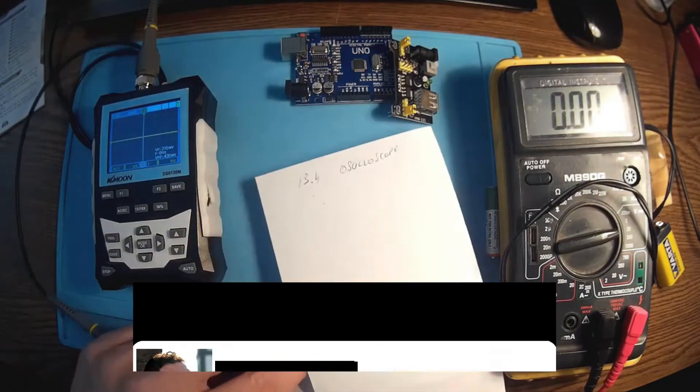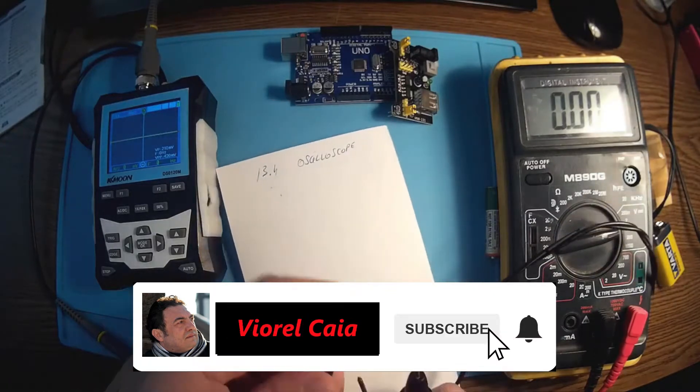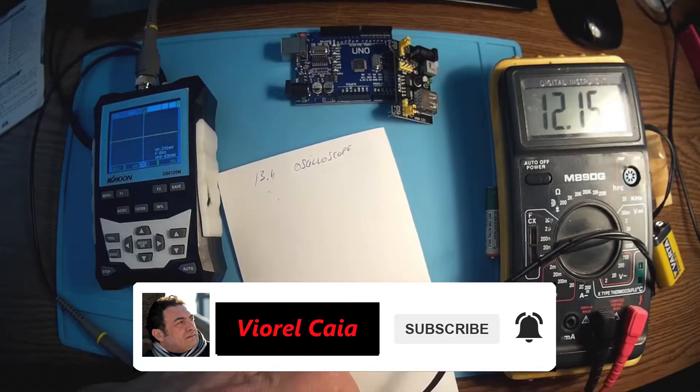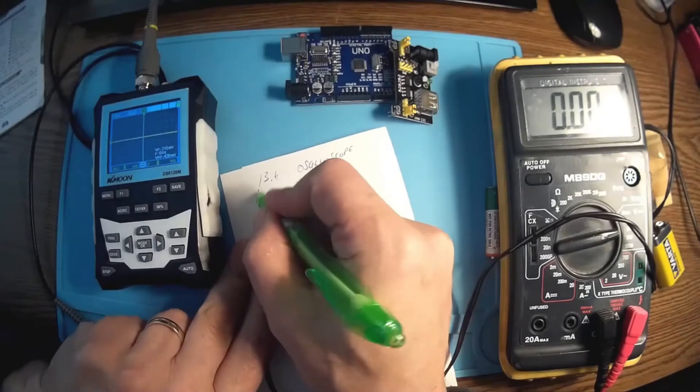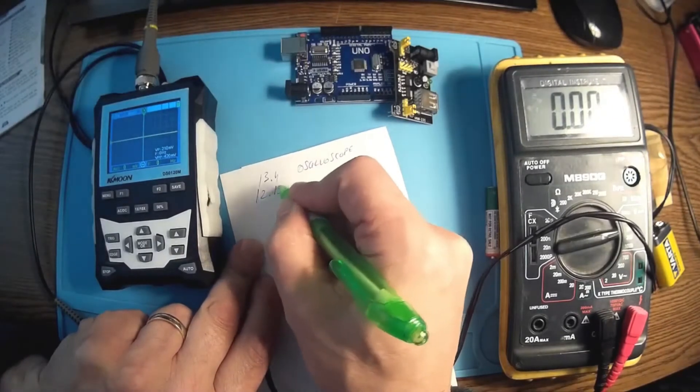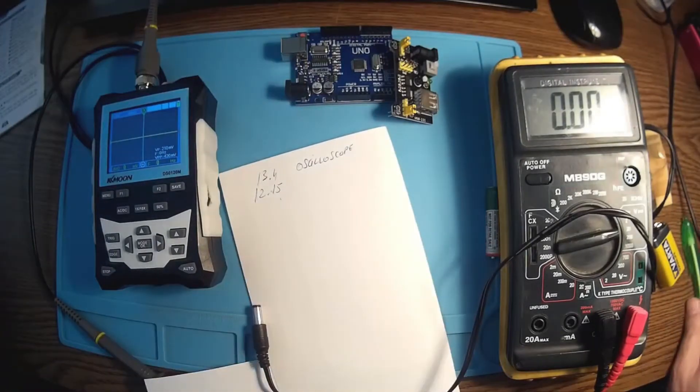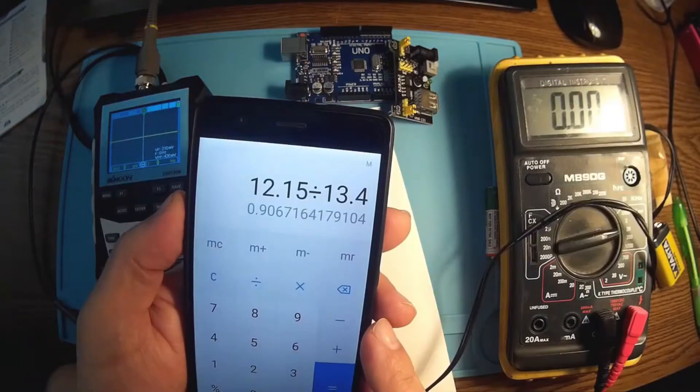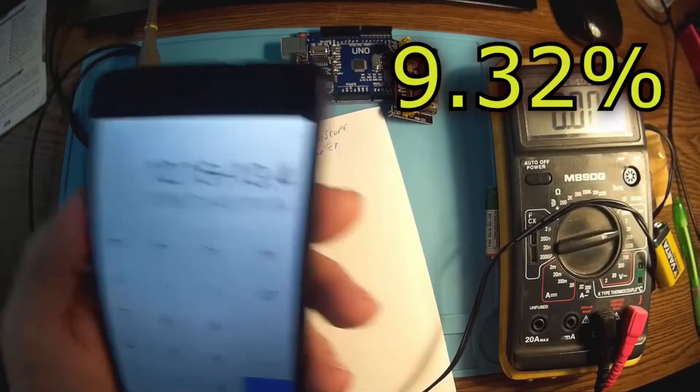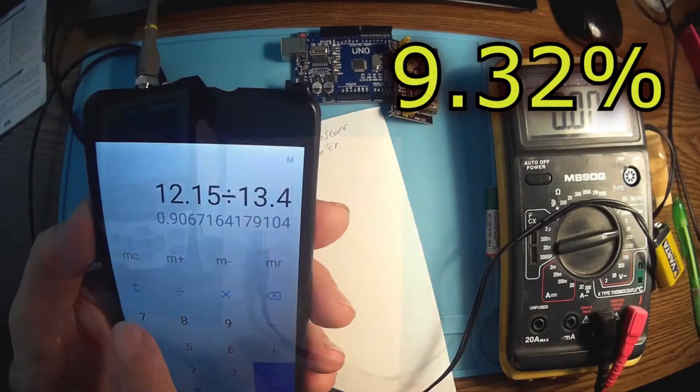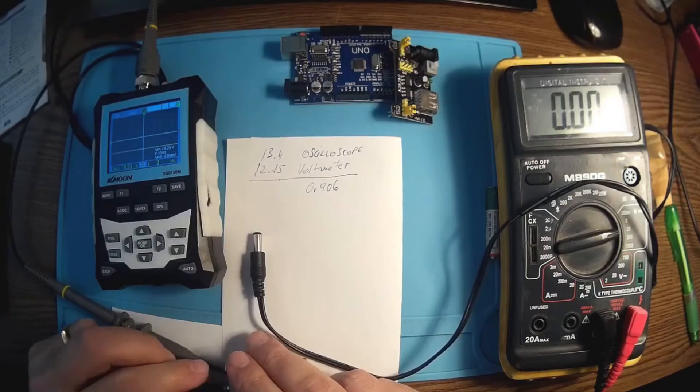So the oscilloscope said 13.4. The voltmeter said 12.15. And that's a difference around 9%. So the oscilloscope is measuring with 9% higher value than the voltmeter.